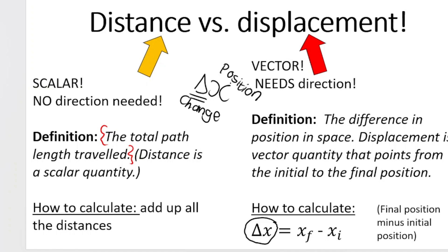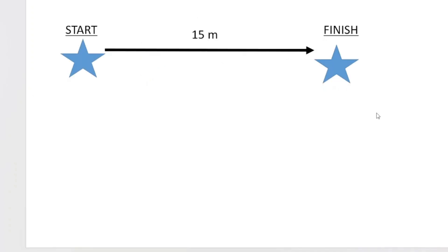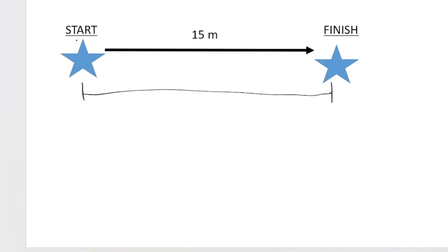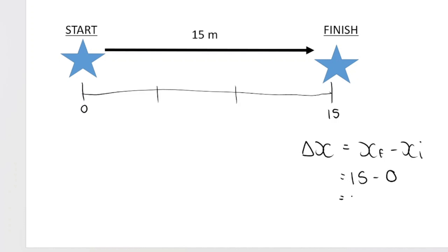Change in position is displacement, and we take our final position minus our initial position. If we look at this scenario, we have our starting position and our finishing position. Going from start to finish, distance is the total path length traveled — that would be 15 meters. Displacement is the change in position: final minus initial. If our reference is the start at zero, then 15 meters along is the end. Our displacement is final 15 minus initial zero, which is 15 meters. Remember, displacement needs a direction — relative to our start, we ended up moving 15 meters to the right.